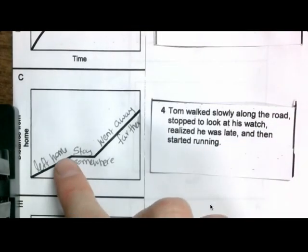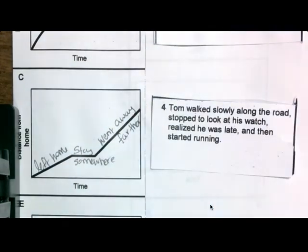Good. Four. Walked slowly. Stopped to look at his watch. And then ran. So we're going to put four next to C.